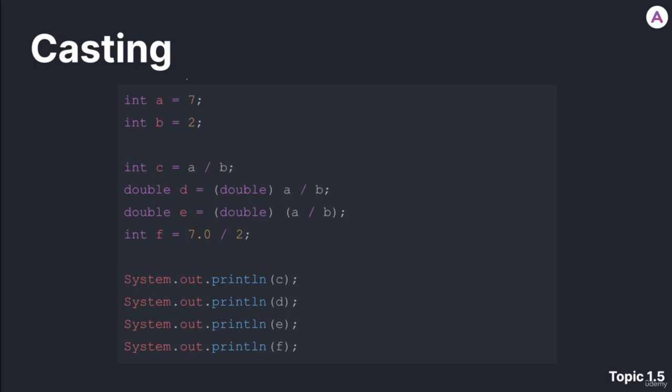Let's move on to casting. So as you see here, we have the same two variables, int a is assigned a value of 7, and then int b is assigned a value of 2. And the key thing is that they are both of data type int.